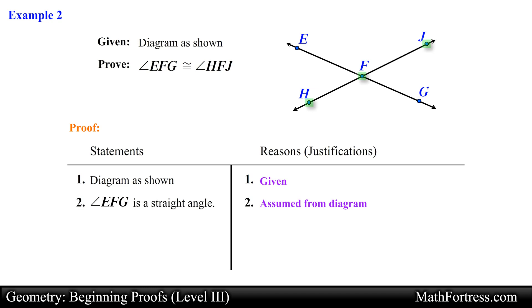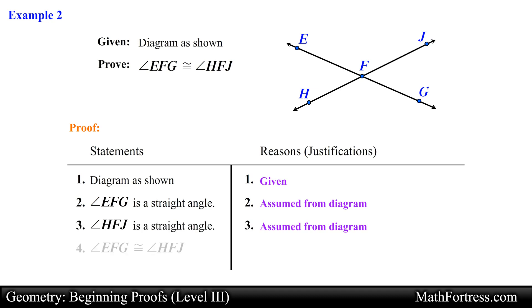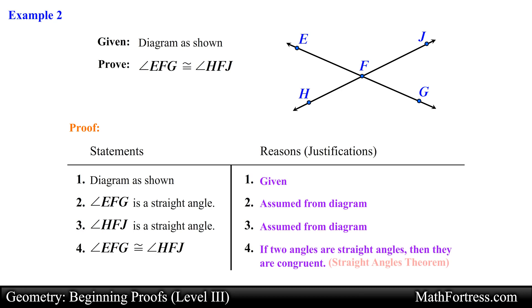In the same manner, angle HFJ is also a straight angle because it is assumed from the diagram. Finally, having established that fact, we can conclude that angle EFG is congruent to angle HFJ because if two angles are straight angles then they are congruent. This is the straight angles theorem that we proved in the previous video. And this ends the proof.